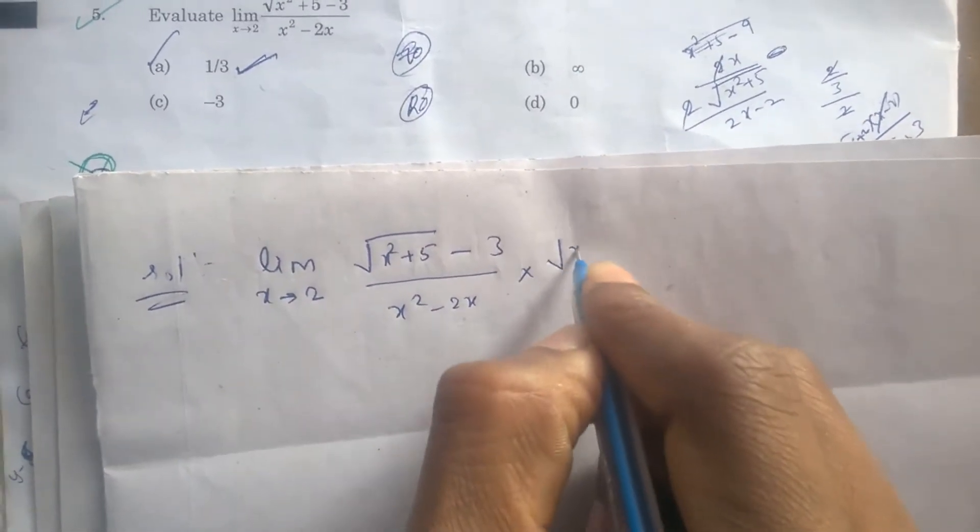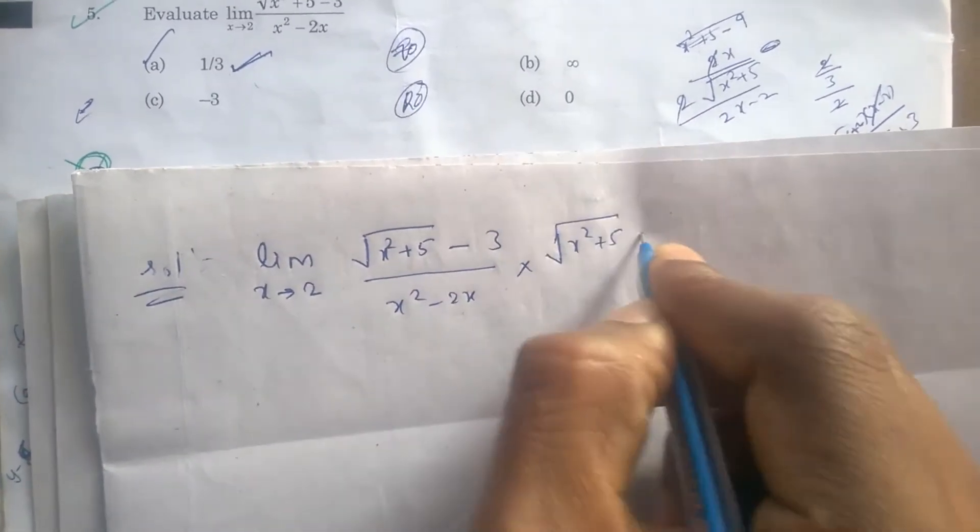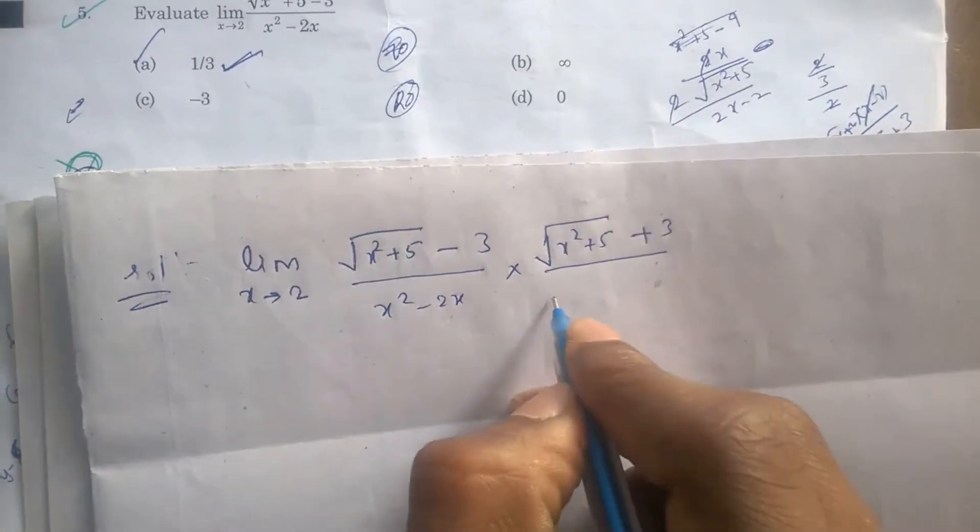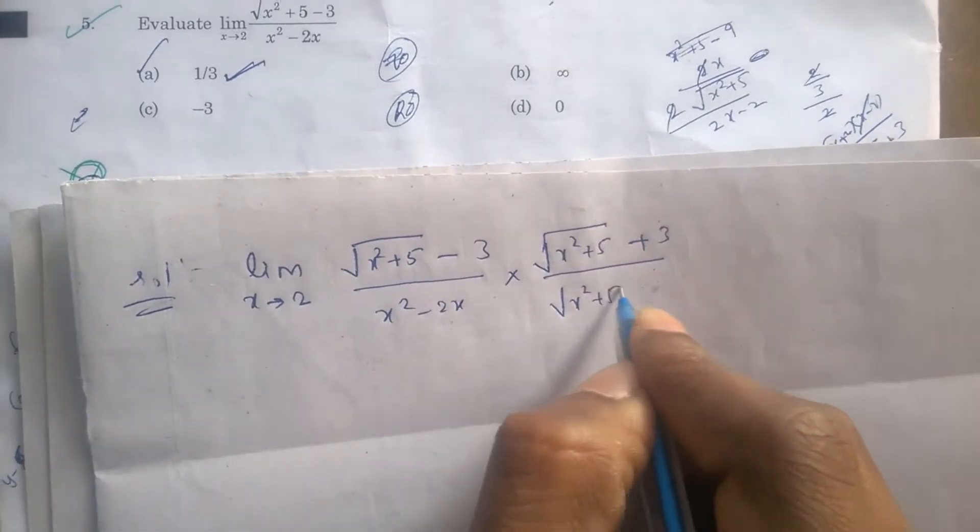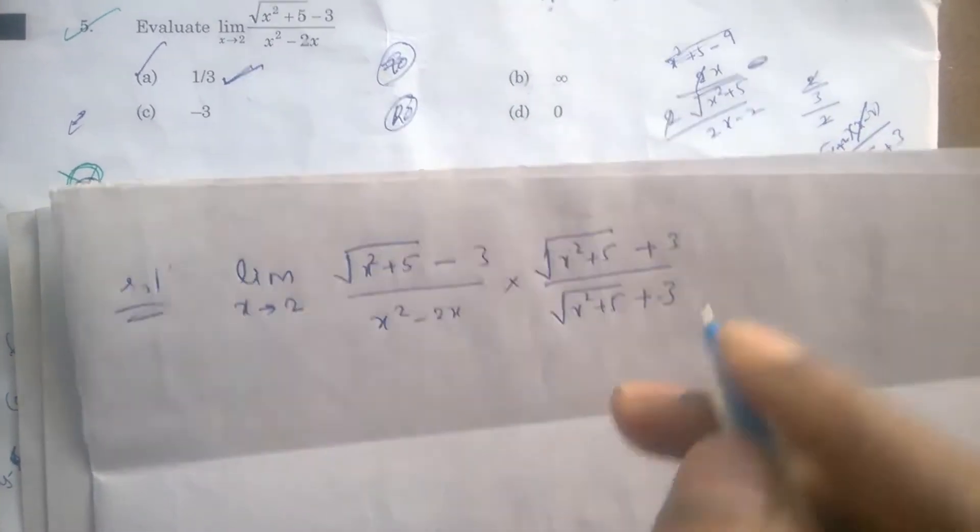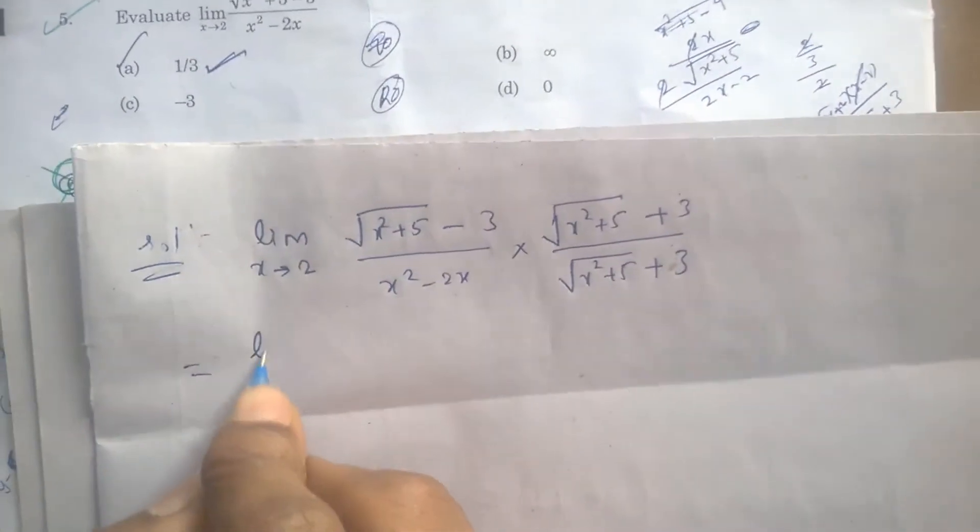By rationalizing the numerator, multiply by √(x²+5) + 3 over √(x²+5) + 3.